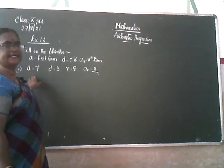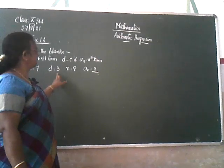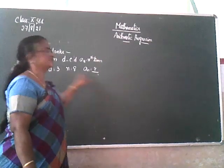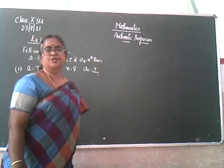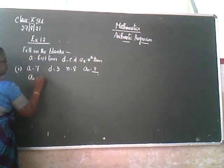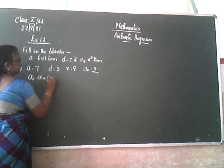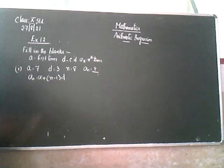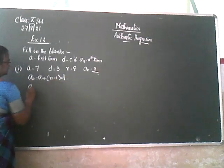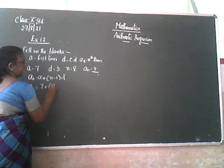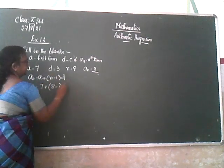In that, A is given as 7, D is given as 3, N is 8, and you must find out AN. You know the formula: AN is equal to A plus N minus 1 into D. So A8 is equal to A is 7, N is 8 minus 1, and D is 3.